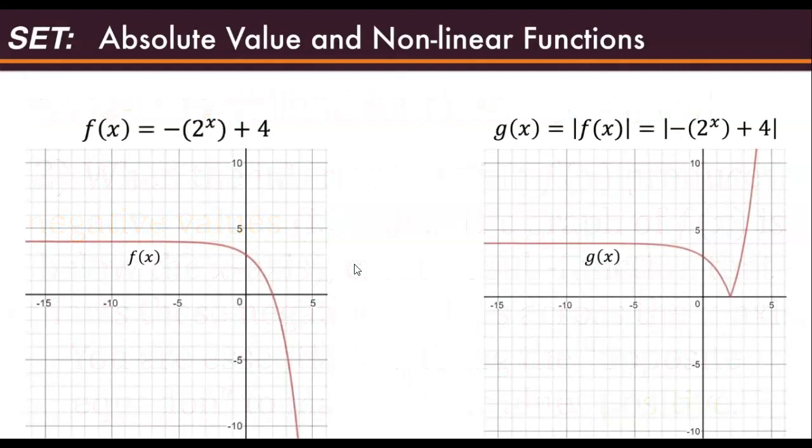Consider the following graphs of f and g. We see that the graph of the interior function f crosses the x-axis at only one point, which is when x equals 2. So the piecewise defined function for g will only have two sub-functions.